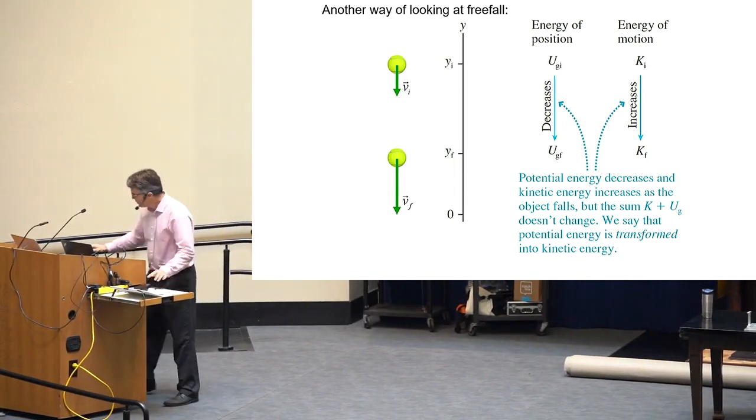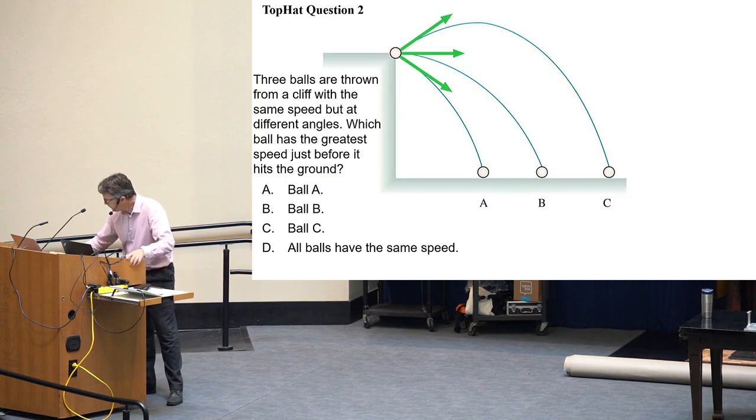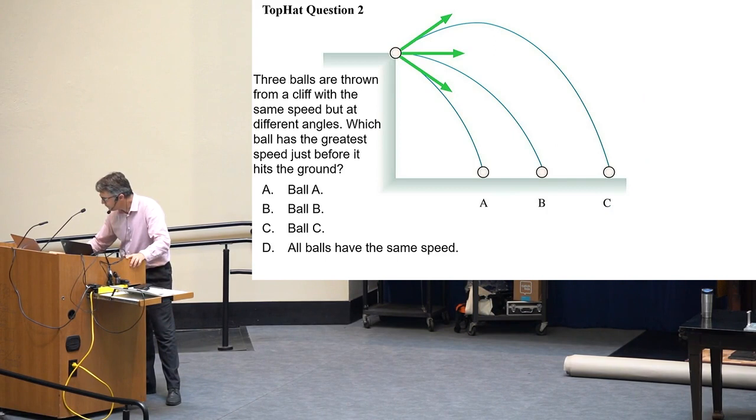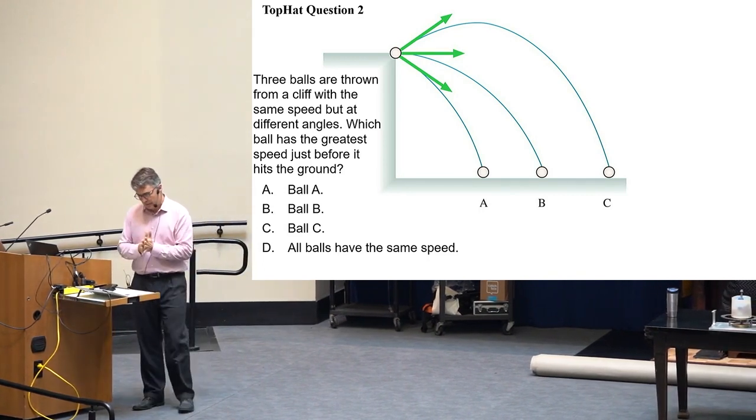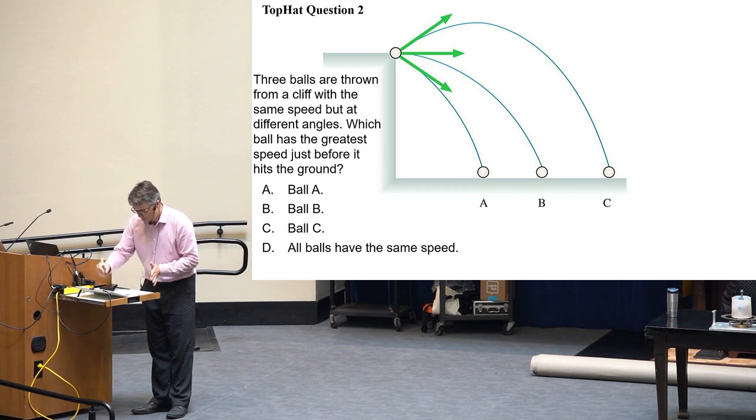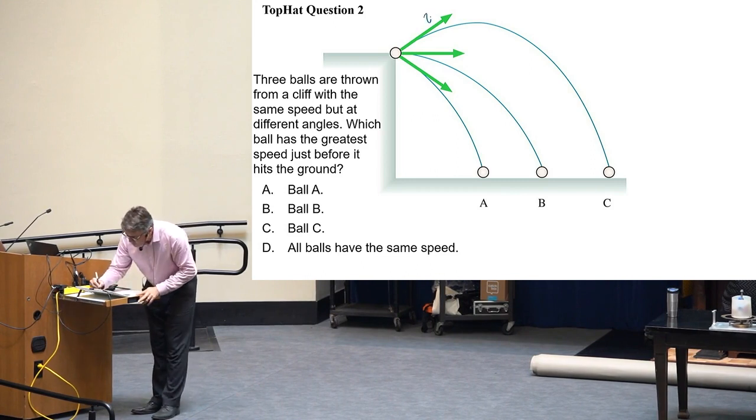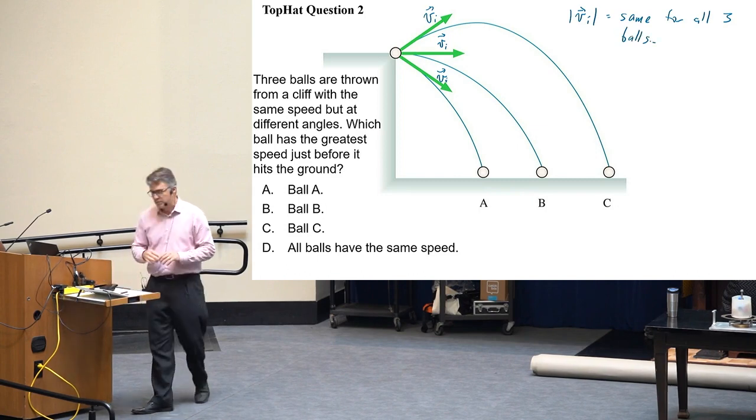So let's do a top hat question. Three balls are thrown from a cliff with the same speed but at different angles. So it's always V_0, V_0, V_0 or something, or V initial. V initial in that direction. V initial in this direction. And V initial in this direction. But it's the same speed. So V_i is the same for all three balls.